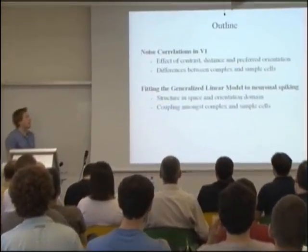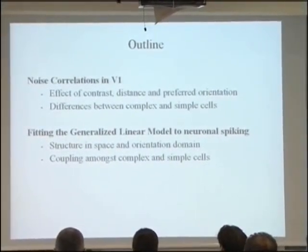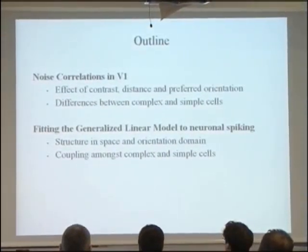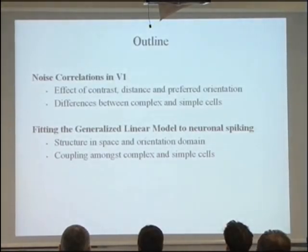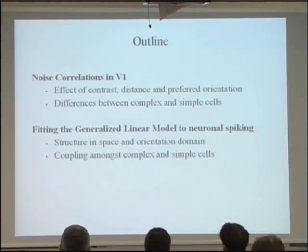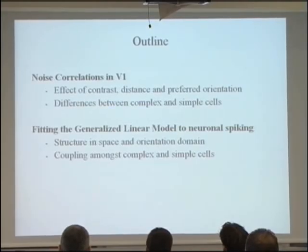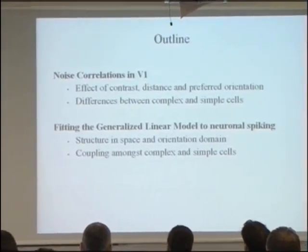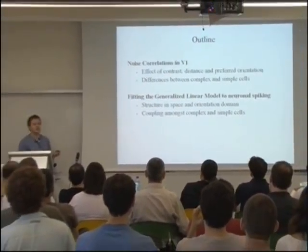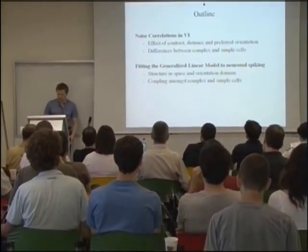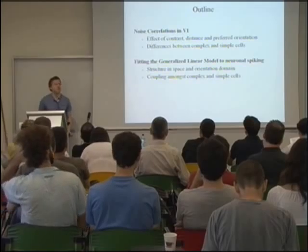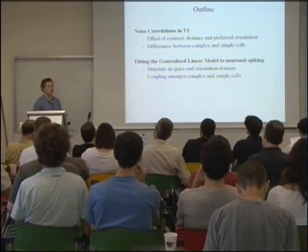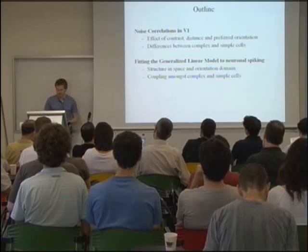The outline of the talk will be: I will look at noise correlations in V1 as a function of contrast, the distance of cells in space, and the distance of cell pairs in preferred orientation. I will further look at differences between complex and simple cells. In the second part, I will fit a generalized linear model to the spike data in V1 and look at the structure of the coupling kernels, seeing whether there are systematic differences between simple and complex cells coupling. This is very much ongoing analysis.